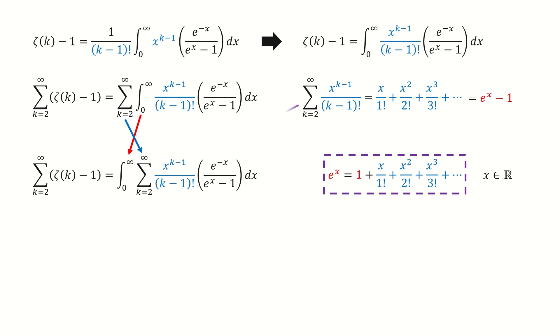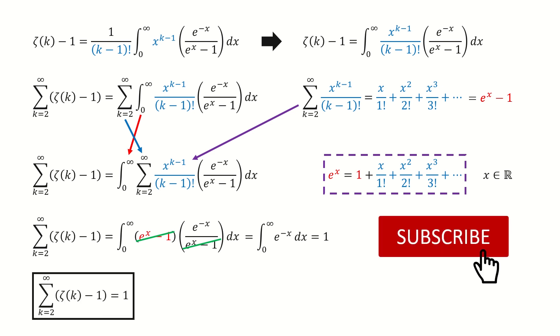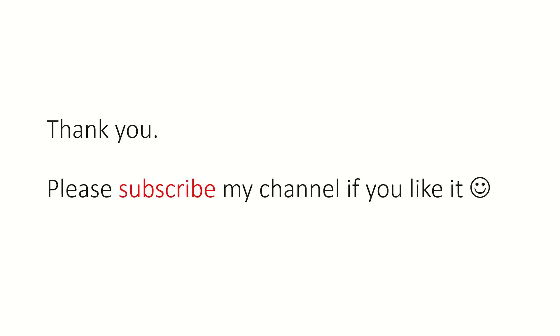Next, we plug in this e to the power x minus 1 to replace this series. So we got here. And these two terms cancel out. So we got this integral, and we know this equals to 1. So we derived this series is equal to 1. Don't forget to subscribe my channel and give a like. And that's all for today. Thank you for watching.